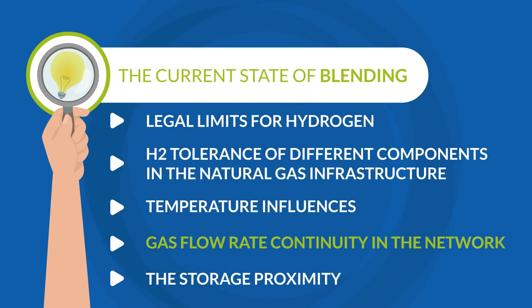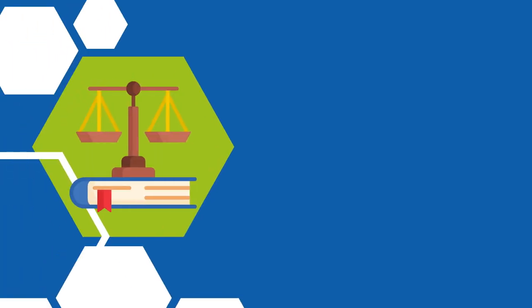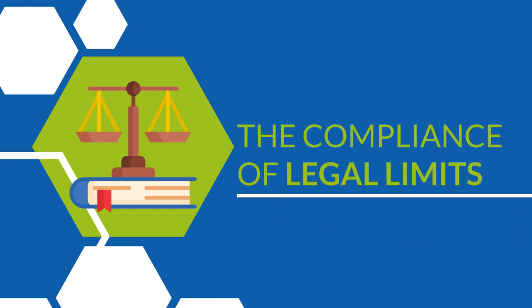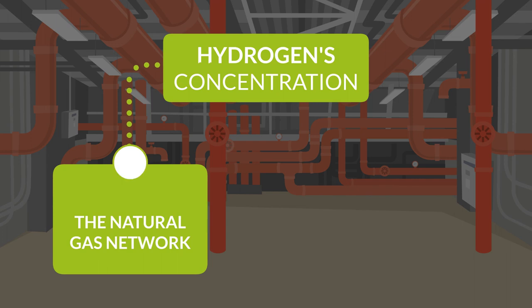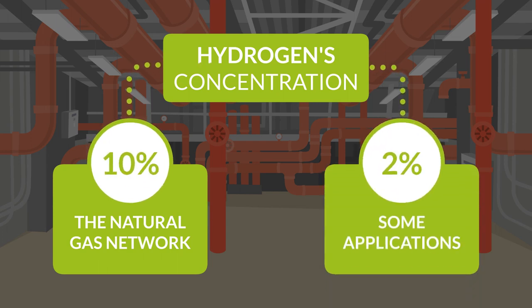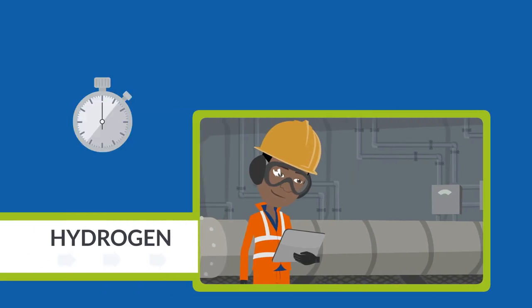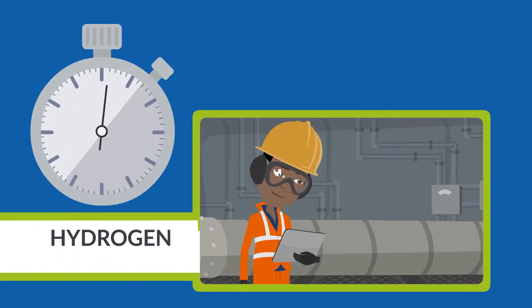The natural gas flow in the grid is another aspect to watch when blending hydrogen. The significance lies in the impact it can have on the compliance of legal limits. Since hydrogen's concentration in the natural gas network is about 10%, and for some applications it can't be above 2%, monitoring gas flow rate is essential to decide when and where to feed H2 into the grid.